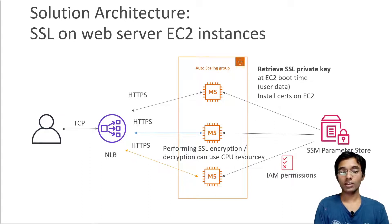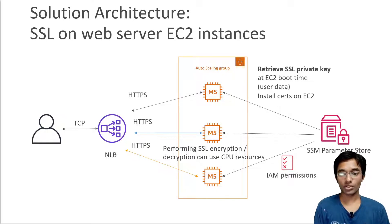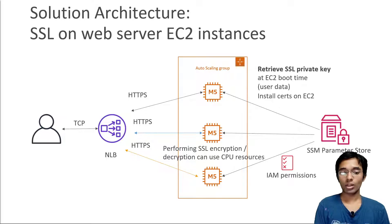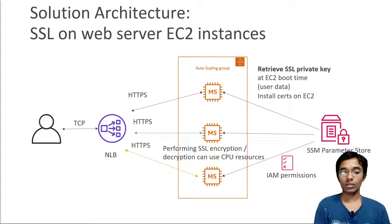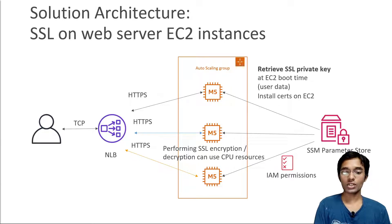For this to work, you need to retrieve the SSL certificates onto these EC2 instances for them to become an HTTPS web server. You can do this using user data scripts at EC2 boot time to retrieve certificates from the SSM Parameter Store and then load them onto your EC2 instances. Obviously, to retrieve these SSL certificates, you will need a properly set up IAM role for your EC2 instances, and then your EC2 instances would be able to provide HTTPS back to your users.